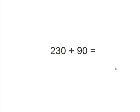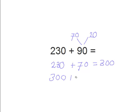I'll show you several problems and we'll use different strategies to solve them. So as you can see, we have 230 plus 90. So this time we're going to split up the numbers. We'll split up 90 into 70 and 20, and then we'll add them. So 230 plus 70 equals 300, and then 300 plus 20 equals 320.